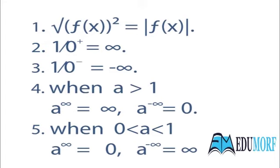Before you evaluate the limit of any function, you must remember these identities. First, the square root of the square of any function is equal to the mod of that function. Second, 1 upon 0+ is equal to positive infinity — it's not exactly zero, it's slightly more than zero.